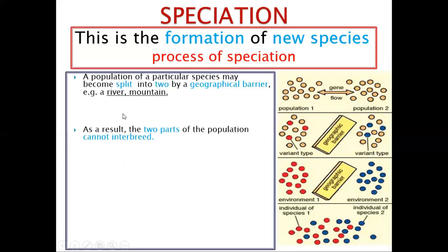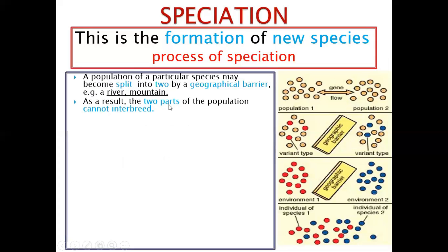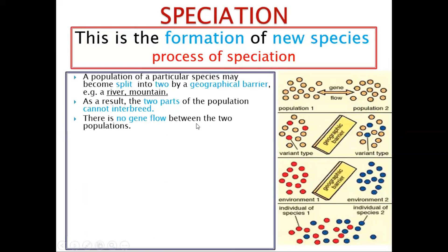As a result, the two parts of the population cannot interbreed. A geographical barrier has been introduced, and these two cannot interbreed. There is no gene flow between the two. This one cannot have sex with that one because of the geographical barrier — it cannot cross this side and the other cannot cross this side.